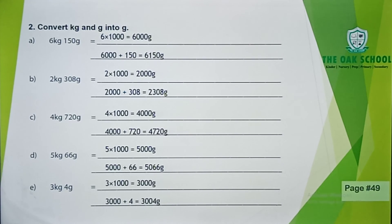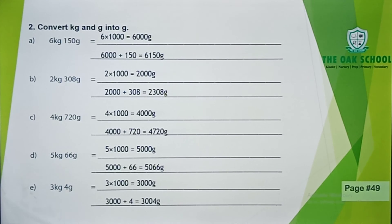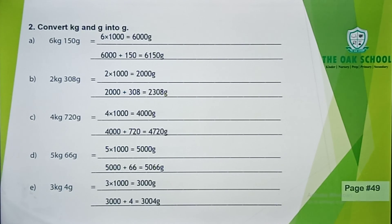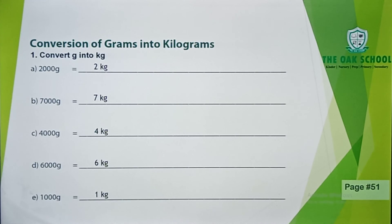If you have 4 kg 720 grams, then you will get 4,720 grams. And if you have 5 kg 66 grams, then you will get 5,066 grams. Then you have 3 kg 4 grams — 3,000 grams plus 4 grams gives 3,004 grams. You will complete this in your workbook. Then turn to page number 51.